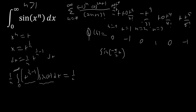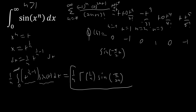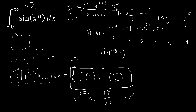The integral equals (1/n) × Γ(1/n) × φ(−1/n), where φ(−1/n) = sin(π/(2n)). That is our answer. As a special case, for n = 2 this becomes the Fresnel integral: the integral from zero to infinity of sin(x²) dx. This equals (1/2) × Γ(1/2) × sin(π/4) = (1/2) × √π × (√2/2) = √π / √8, or equivalently √(π/8).